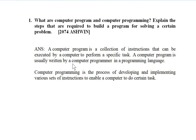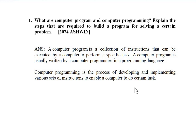What is computer programming? Computer programming is the process of developing and implementing various sets of instructions to enable a computer to do certain tasks. When you are developing and implementing this program, that is called programming. This is the first part, worth two marks.